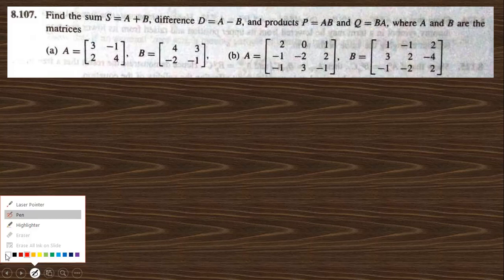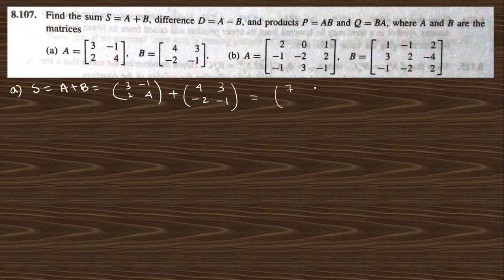Go to question number 8.107, which says to find the sum, difference, product, and more for this practice. First, we do question A. The sum S = A + B: A is [3, 2; -1, 4] plus [4, -2; 3, -1]. Adding term to term: 3+4=7, -1+3=2, 2-2=0, and 4-1=3.